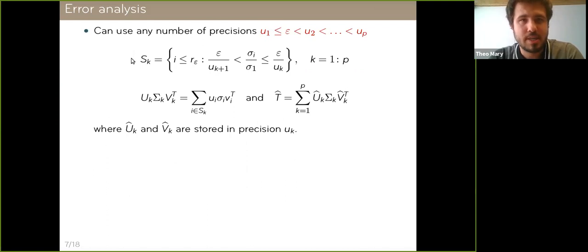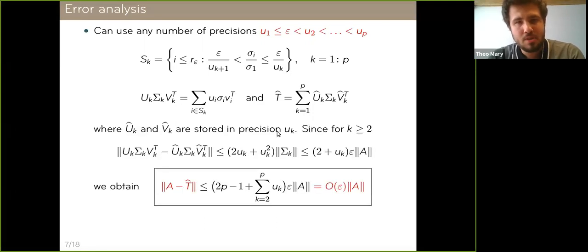We're going to define some index sets, Sk, which are going to tell us which singular vectors and values we're going to store in the precision Uk. We will take all singular values that are in between epsilon over precision Uk plus 1 and epsilon over precision Uk. And this is our group number k, which we're going to store in precision Uk. And now, if we define t hat, the truncated SVD that we obtained by doing exactly that, then we can prove the following. The error that we introduced by converting group number k to precision Uk is of order uk times norm of sigma k, which by construction would be less than something of order epsilon norm of A.